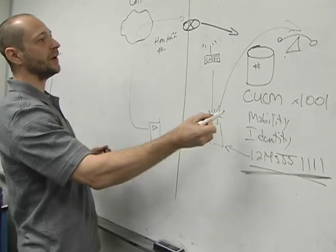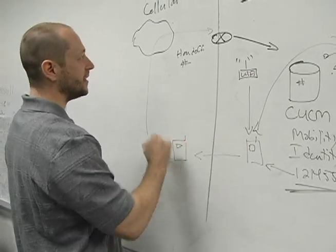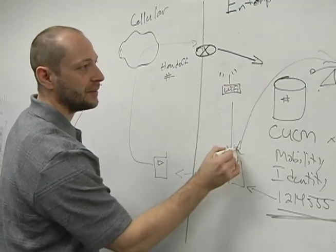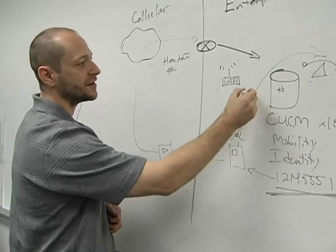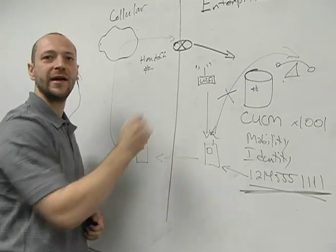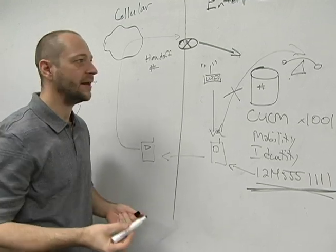Now, at this point, we have two media connections. I've got a media connection here and I've got a media connection here. In order to hand off this phone call, all I have to do is break media over the wireless LAN.